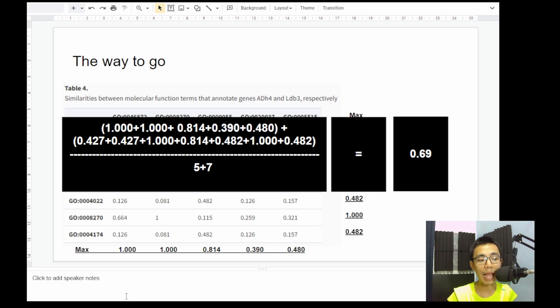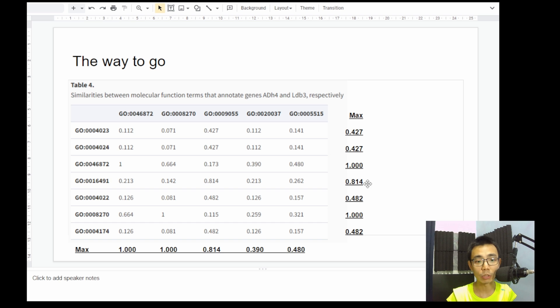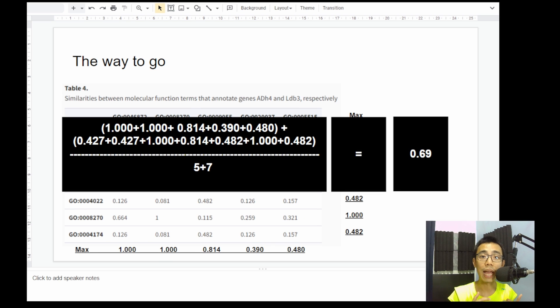So in this case, just by adding up all the maximum and all the maximum plus together, divide by 12. Because as you can see, there's 12 of them, seven plus five. And the average, the actual similarity score we calculate now is 0.627.